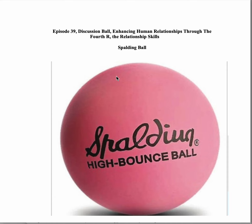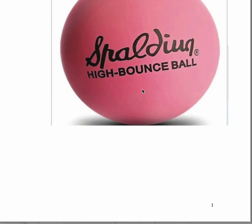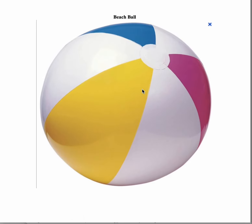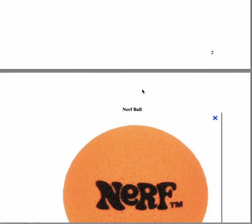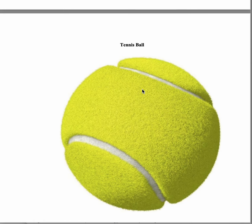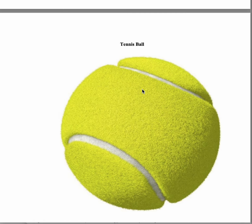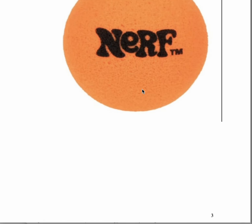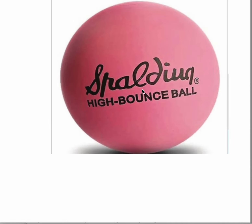Let's first examine different types of balls that you could utilize when implementing discussion ball. You can do a Spaulding ball. You can do a beach ball, depending upon the skill level of the participants. You can even do a Nerf ball, and you can do a tennis ball. So let's get back to the Spaulding.